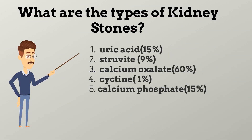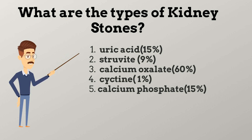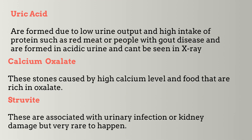There are five types of kidney stones: number one, uric acid, with an average of 15 percent; number two, struvite, with an average of 9 percent; number three, calcium oxalate, with an average of 60 percent; number four, cystine, with an average of about 1 percent; and number five, calcium phosphate, with an average of 15 percent.